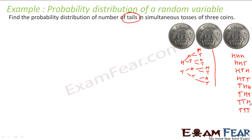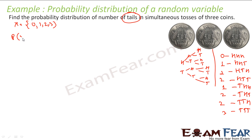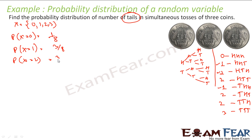I am looking for the number of tails. Number of tails is zero in HHH, one in the next set, two in the next, and three in TTT. So x can be 0, 1, 2, or 3. Probability of x equal to 0 is 1 by 8. Probability of x equal to 1 — there are three outcomes — is 3 by 8. Probability of x equal to 2 is also 3 by 8.